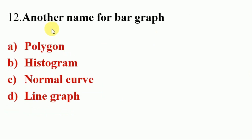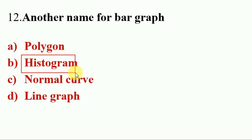Next question. Another name for bar graph — Options A. Polygon, B. Histogram, C. Normal curve, D. Line graph. Answer is B. Histogram. So another name for bar graph is Histogram.